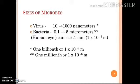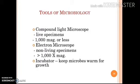Sizes of microbes: viruses are in the range of 10 to 1000 nanometers. Bacteria are in the range of 0.125 micrometers. The human eye can see down to 0.1 millimeter, which corresponds to 1 billion times magnification for viruses and 1 million times for bacteria. Tools of microbiology help us observe microorganisms.